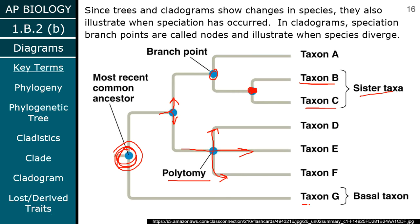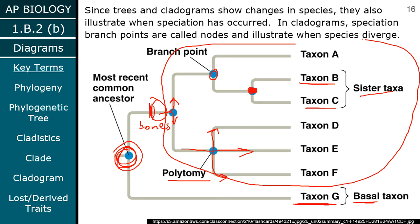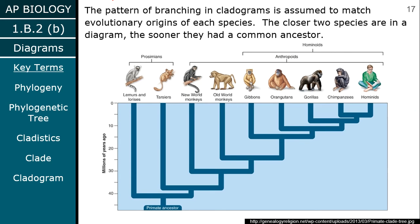Finally, on this tree, taxon G — group G, whatever it is — is the basal taxon. It's the one furthest back; it evolved furthest back on the tree. This is going to be our outgroup. If some trait — let's say bones — evolved right here, every organism in this monophyletic group has bones, and the outgroup, taxon G, doesn't have bones. As you look back, you have a more basal group that has less in common with all the others.